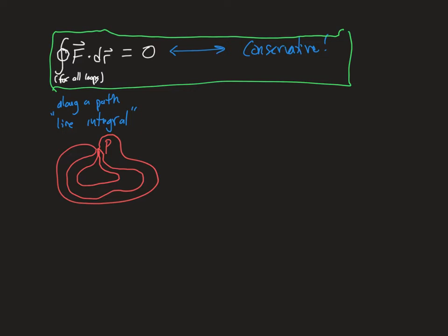We're going to break the proof into two steps. First, we'll assume the loop integral is zero for all loops and prove that the force is conservative and path independent. Then we'll go backwards — starting from a conservative, path-independent force and proving that the loop integral must be zero. So let's do the forward direction first.